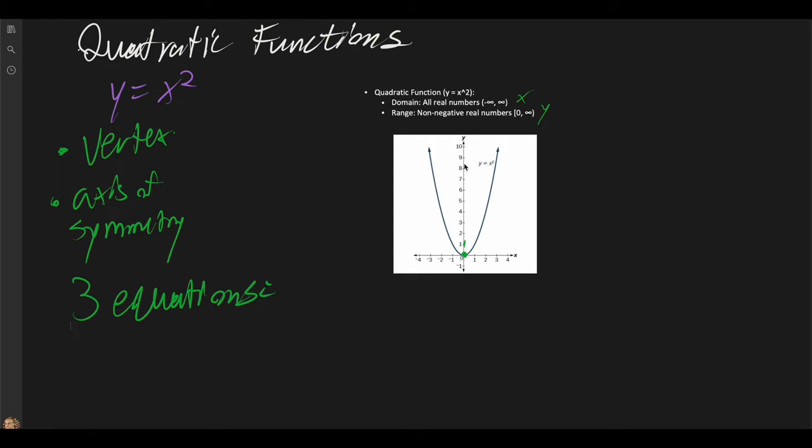There are two parts that construct quadratic functions. The vertex, which is denoted as this dot over here — the pinnacle — and then we have the axis of symmetry, which is an invisible line which goes all the way down, far to the left and far to the right. It's like a mirror between one side to another.